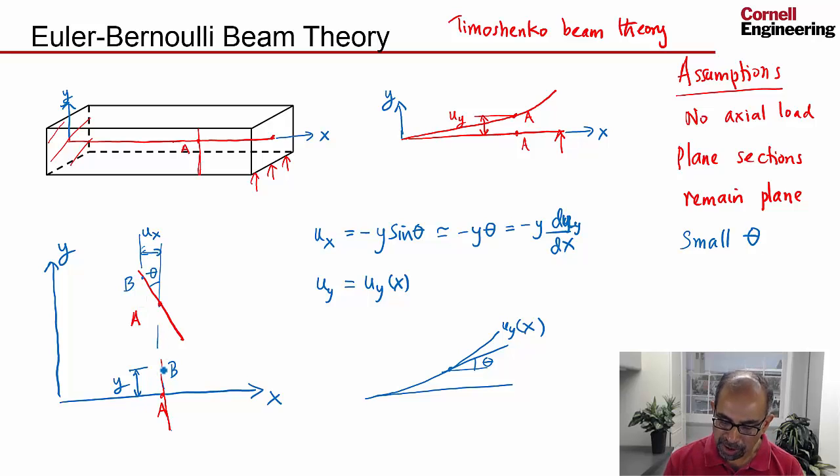And u y, you assume that it's only a function of x. Really, the point B moves a little bit more or less than A in the y direction, but you ignore that difference, and you say, I'll assume that the whole cross section moves the same distance in the y direction. So this is really an approximate thing. So key things happen here.